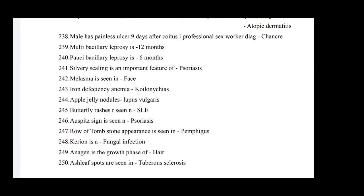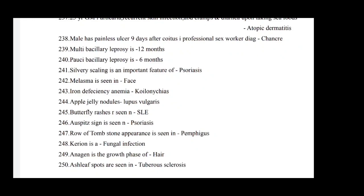Male with painless ulcer nine days after coitus with professional sex worker: diagnosis is chancroid. Multi-bacillary leprosy treatment is 12 months. Paucibacillary leprosy treatment is six months. Silver scaling is an important feature of psoriasis. Plasmoma is seen on face. Iron deficiency anemia causes koilonychia. Apple jelly nodule is seen in lupus vulgaris. Butterfly rash is seen in SLE. Auspitz sign is seen in psoriasis. Tombstone appearance is seen in pemphigus. Cryotherapy is a fungal infection treatment. Anagen is the growth phase of the hair. Ash leaf spots are seen in tuberous sclerosis.